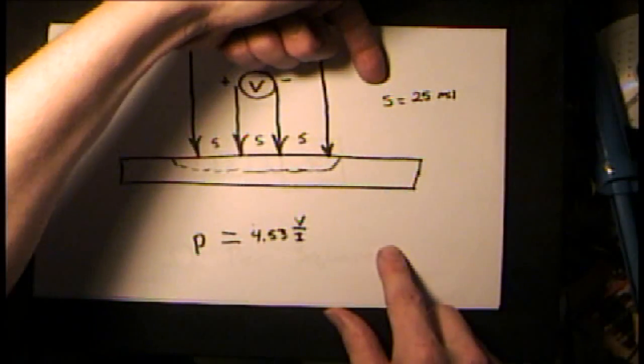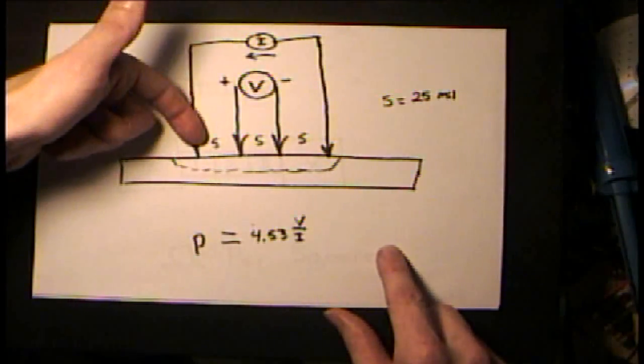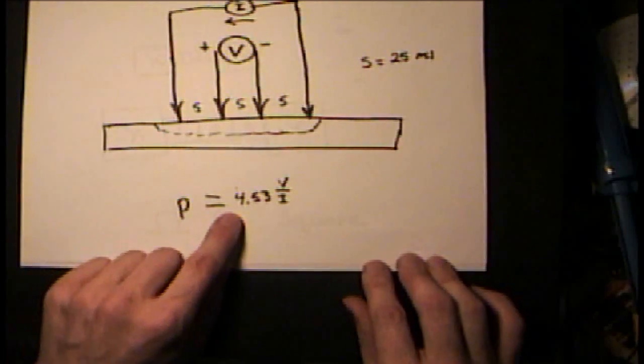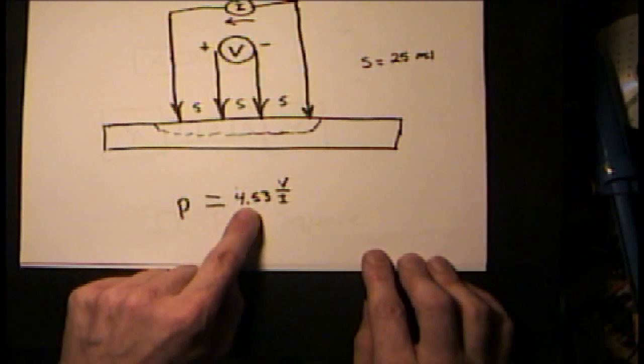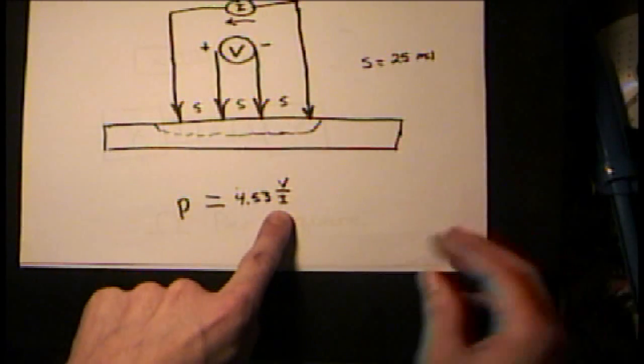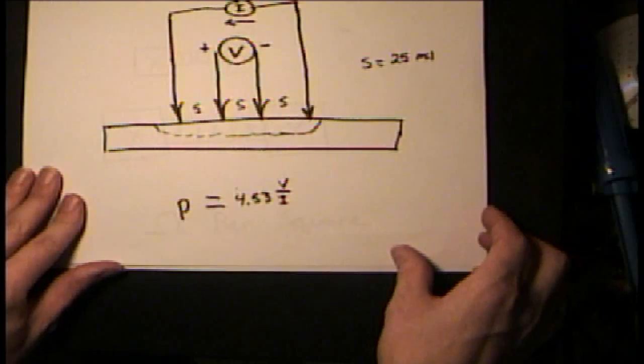If you space your probes 25 mils apart, this is the equation you would use. The sheet resistance of your wafer will be 4.53 times V over I, voltage over current.